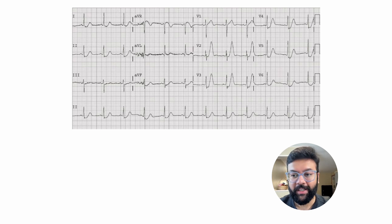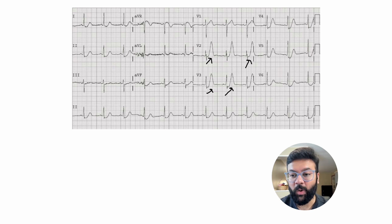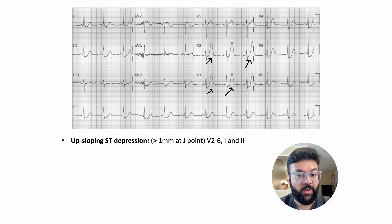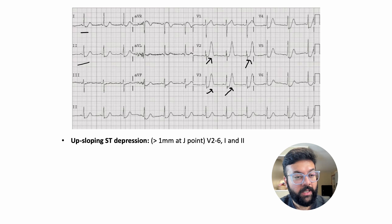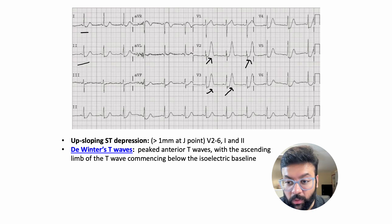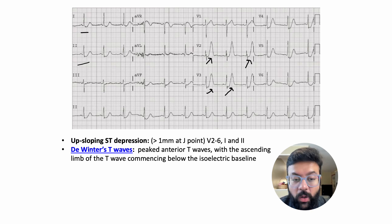Next case — what do you see here? These are tall T waves. Do you see any ST changes in the chest leads? There are upsloping ST depressions from V2 to V6, and also in leads 1 and 2. These are called DeWinter's T waves, and most guidelines now recommend considering this a STEMI equivalent.